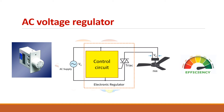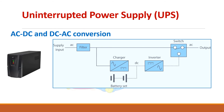In the electronic fan regulator, a TRIAC is used to control the speed of the motor. The control circuit determines the conduction angle, that is the firing angle of the TRIAC. When the firing angle changes, the average voltage changes, and thereby the speed of the motor changes. In this method, the fan takes only the required voltage with no unnecessary power dissipation, making it more efficient than the resistive regulator.